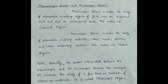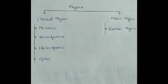Recently, the domain intermediate between the macroscopic and the microscopic domains has emerged. It involves the study of a few tens or hundreds of atoms or molecules. It is called mesoscopic physics.